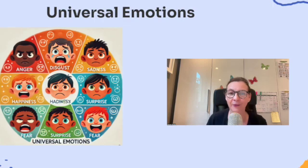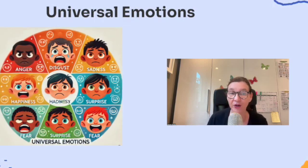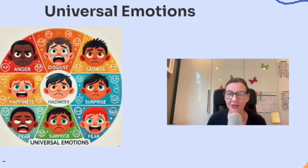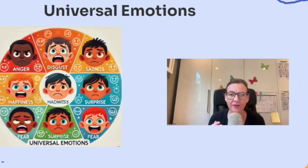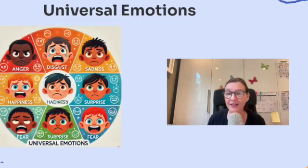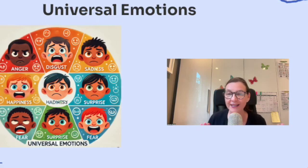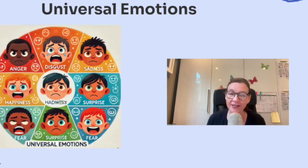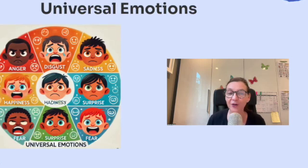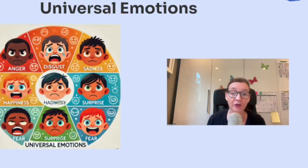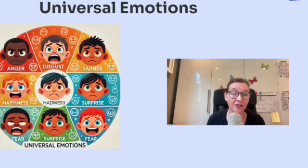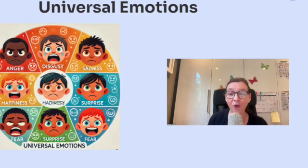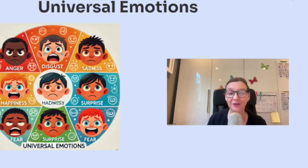Let's think about an example. Imagine you're traveling to a country where you don't speak the language. Even if you don't understand the words, you probably recognize a smile as a sign of happiness or a frown as a sign of sadness. That's because these facial expressions are universal — they transcend language and culture. Understanding universal emotions helps us connect with people no matter where they're from. It's also useful in areas like cross-cultural communication, psychology, and even artificial intelligence, and it reminds us that at our core, we're all human and experience emotions in similar ways.